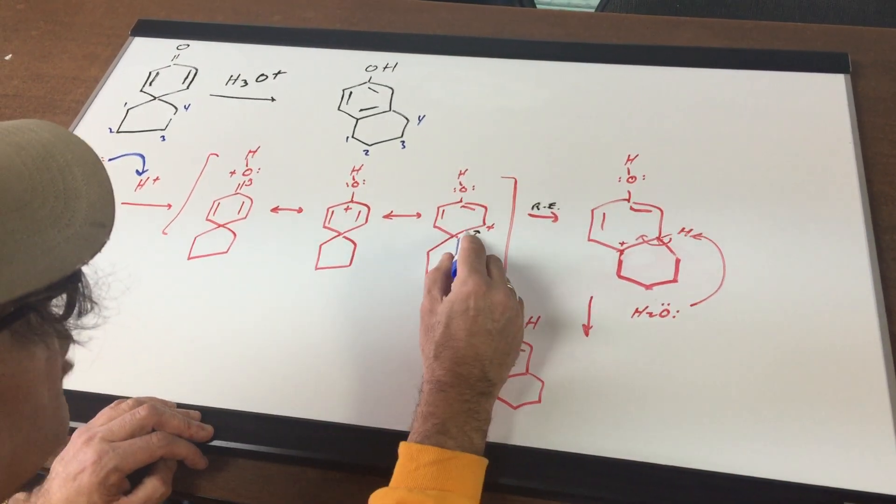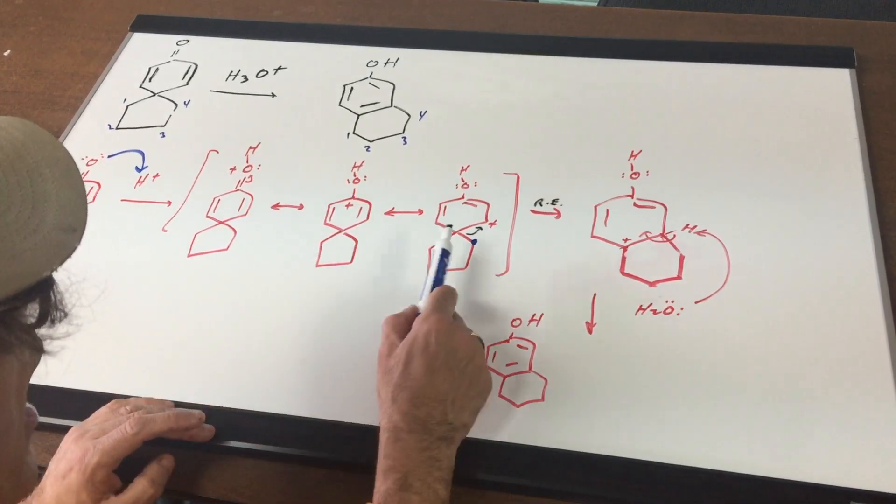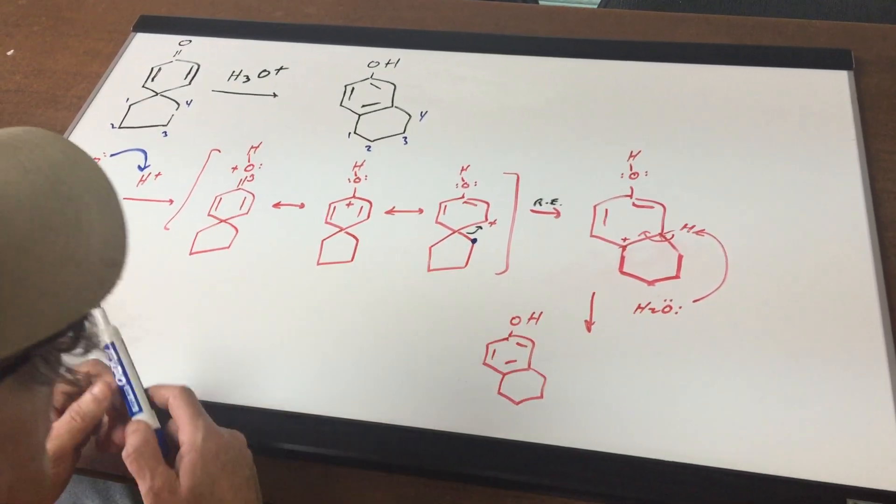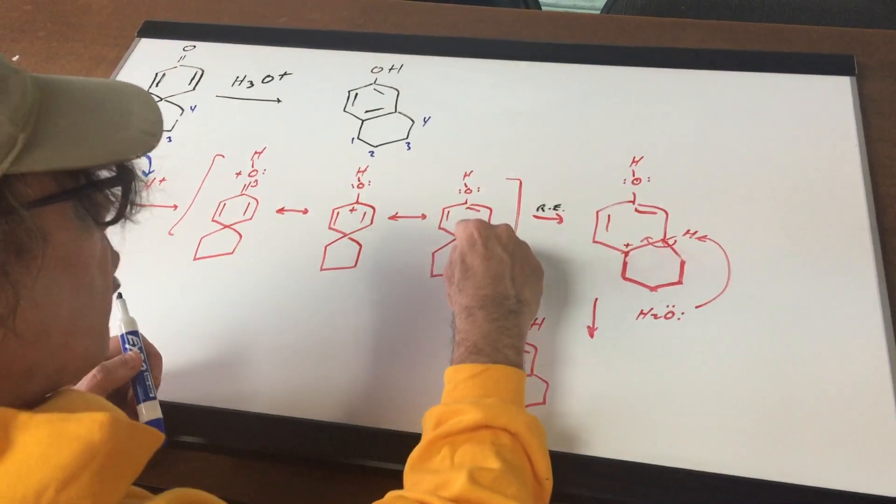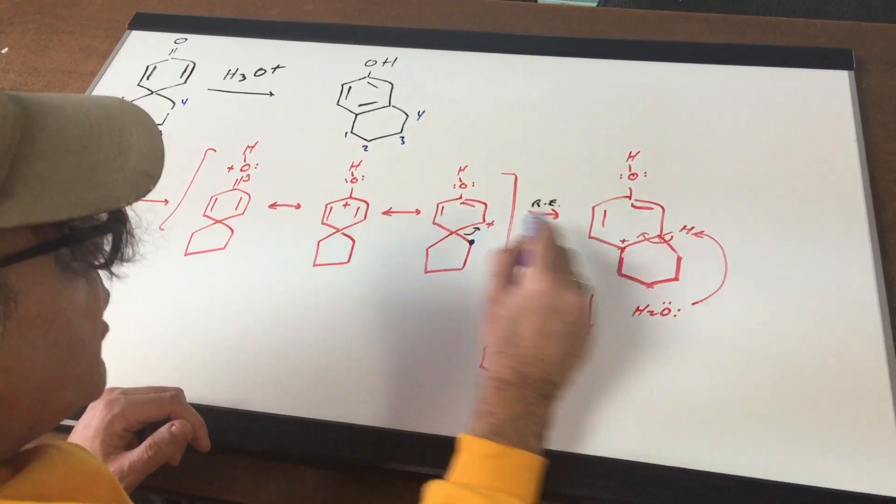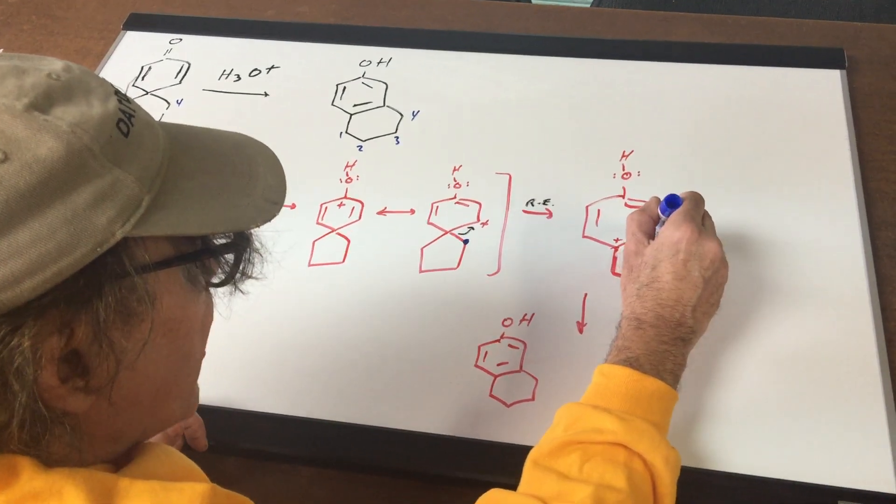There's my carbon number 4 and now I can do a ring expansion. I want to get rid of this spiro compound, it's putting some strain on the molecule and by moving it over so if you took this bond and you move that over so now it looks like this.